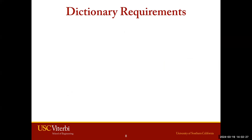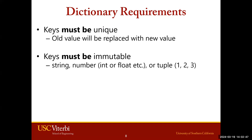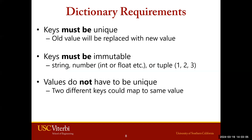Dictionaries have a few requirements you must be aware of. First, keys must be unique — if you try to add something with a key that currently exists, you would essentially be replacing the old value with a new value. Second, dictionary keys must be immutable; remember, immutable types are strings, integers, and floats. For our class, the keys we primarily use will be strings. Values do not have to be unique, so two different keys can map to the same value. Values can be mutable or immutable.